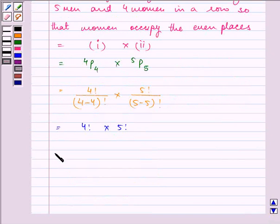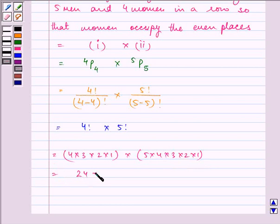That can be written as 4 times 3 times 2 times 1, times 5 times 4 times 3 times 2 times 1.